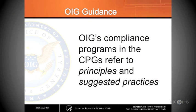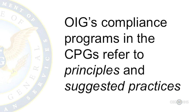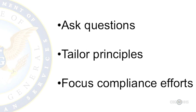For example, let's say you're a physical therapy group looking to enter into an arrangement with a nursing home. There isn't a CPG for physical therapists, but there is a CPG and supplemental for nursing homes. The physical therapy group would benefit from reviewing the proposed arrangement in light of the risk areas laid out in the nursing home CPGs. This could help identify potential red flags for parties on both sides of the arrangement. When we talk about compliance programs in the CPGs, we do so in terms of principles and suggested practices. We do not provide a model compliance program because we recognize that every organization is different and the CPGs are not intended to be one-size-fits-all guidance.